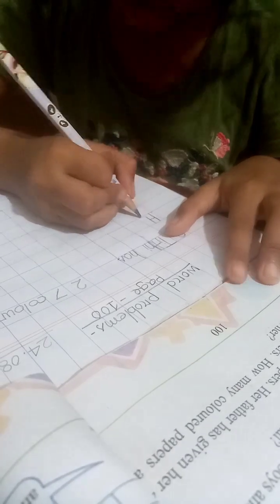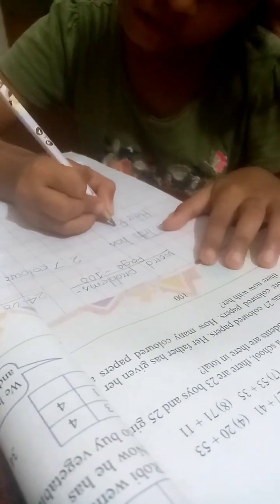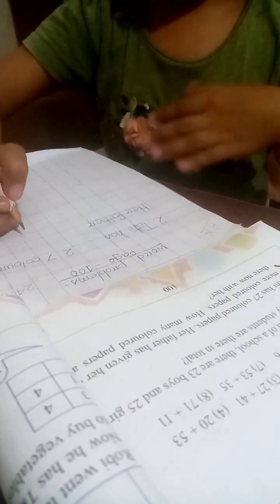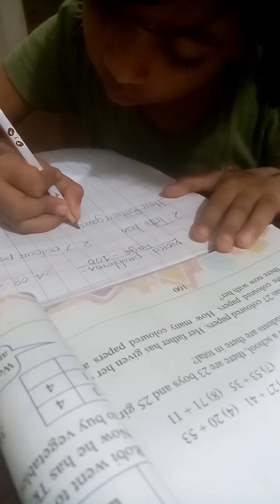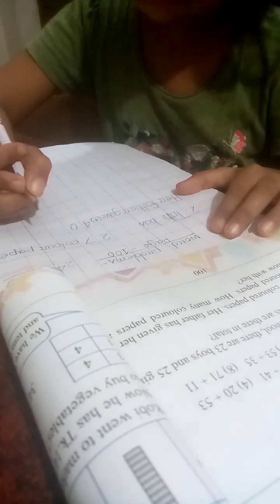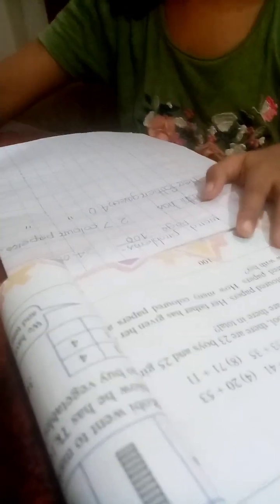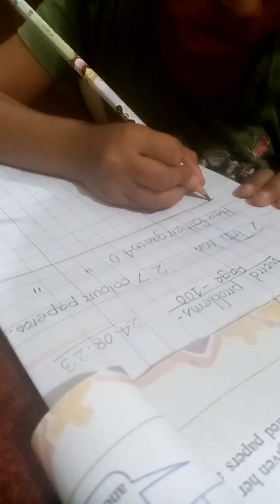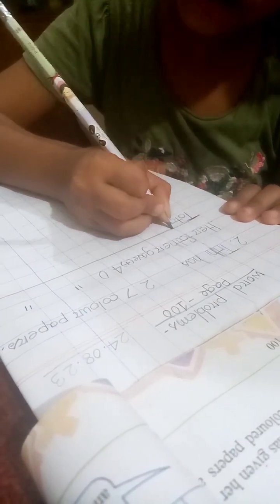H-E-R her father. F-A-T-H-E-R father. G-A-V-E gave 40. 40 color papers. T-O-T-A-L total.